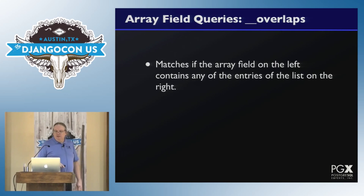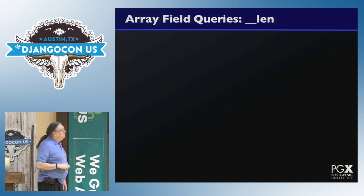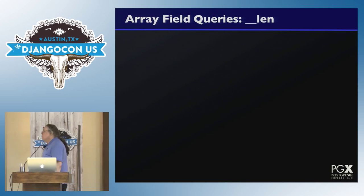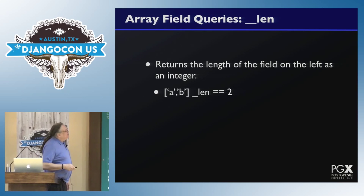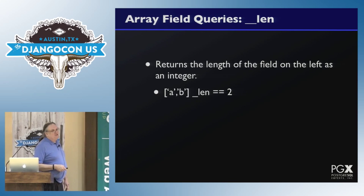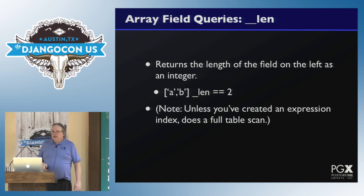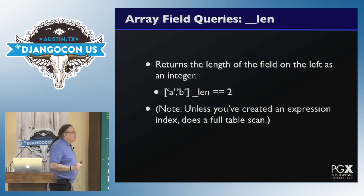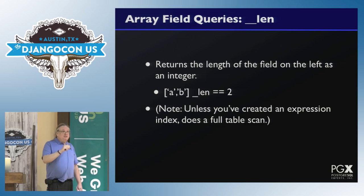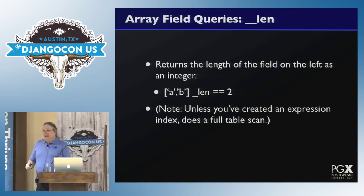Then you have 'overlaps', which is the any-version of this — this overlaps that, but that does not overlap that. Those return a boolean. Then you also have the predicate '__len', which returns the length of the field on the left as an integer. Something to remember about this is that unless you've created an expression index, this is going to do a full table scan — it will pick up every single row in the database for that table, calculate the length, and filter it. So you probably don't want to do that on a big table.